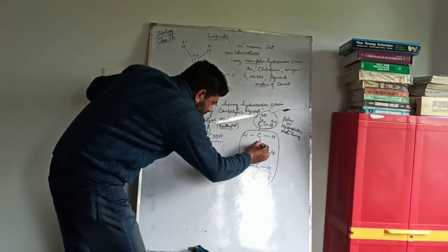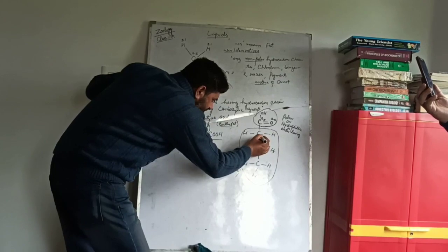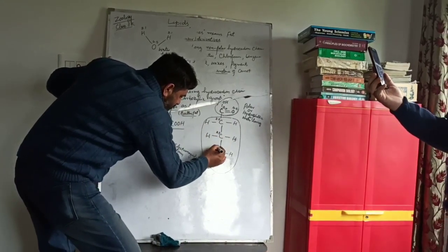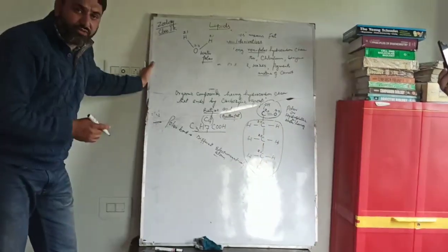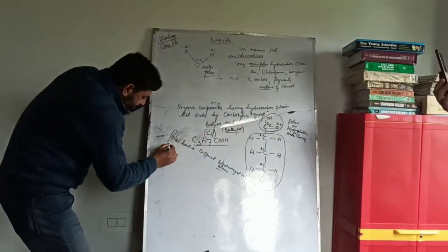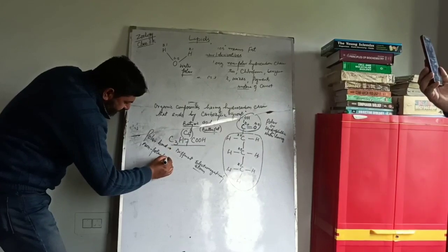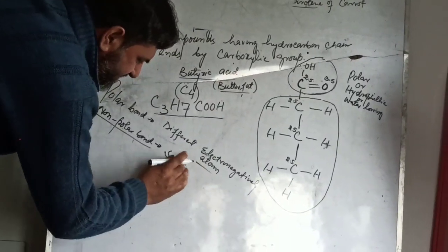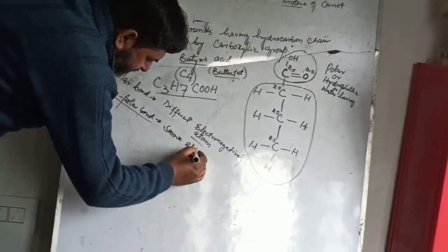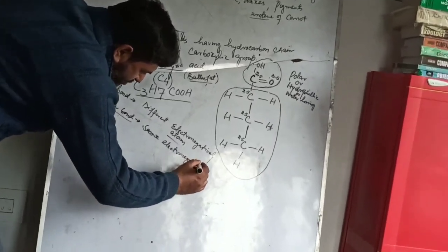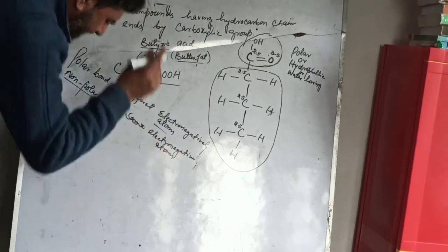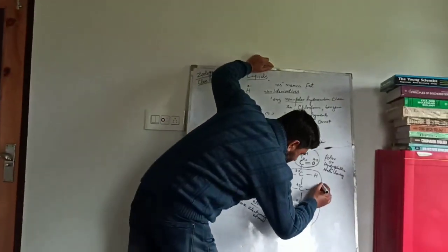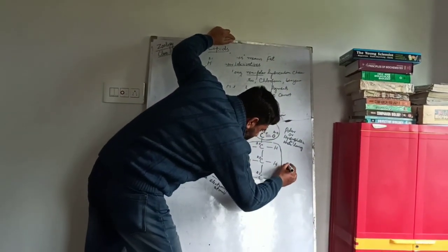If you see the hydrocarbon chain, the main bond is between carbon and carbon. Each carbon has electronegativity 2.5 - same for all carbons in the chain. So when there is a bond between atoms of the same electronegativity, that is called a nonpolar bond. A nonpolar bond is one present between atoms of the same electronegativity - also called a homoatomic bond. That is why this hydrocarbon chain is nonpolar.